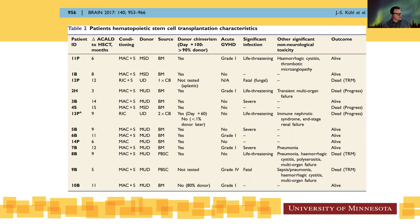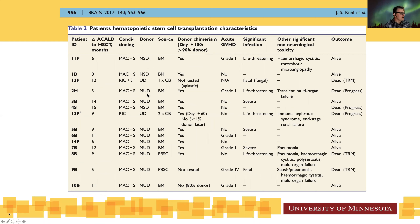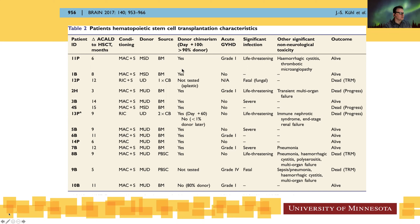The second table shows the transplant characteristics — conditioning regimen (myeloablative versus reduced intensity), donor source (MSD is matched sibling donor, still the gold standard; sometimes a matched unrelated donor was used), and cord blood donor. They looked at donor chimerism, described any GVH, any infection, other neurologic toxicities, and then the outcome.